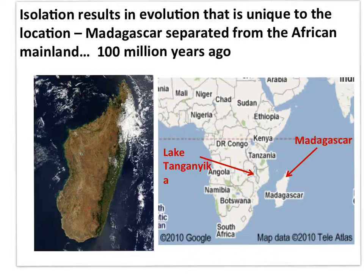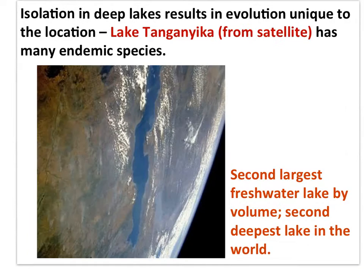The isolation of islands has resulted in species unique to the island — this is what makes the biology of islands so interesting to study. As one example, Madagascar is the only location where the primate lemur can be found. Deep lakes are also locations where populations can become isolated from other populations, resulting in allopatric speciation. Lake Tanganyika has many endemic species found nowhere else.